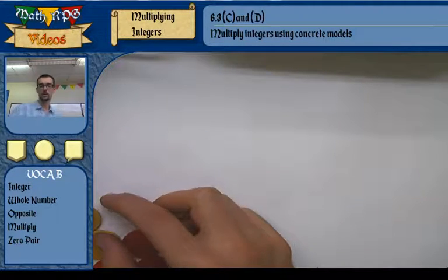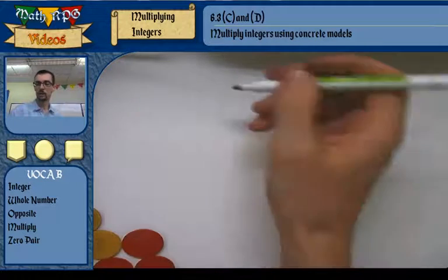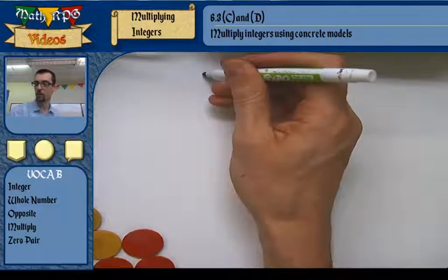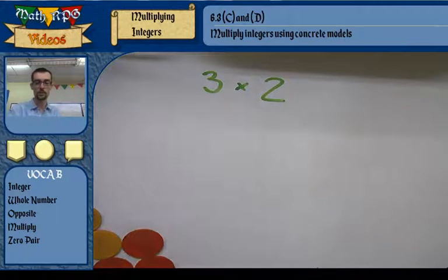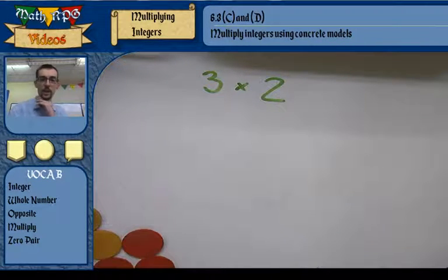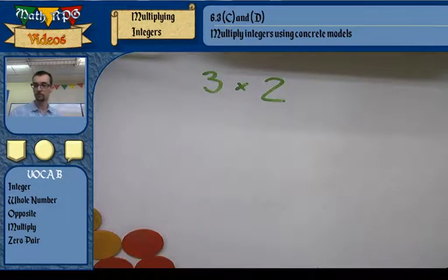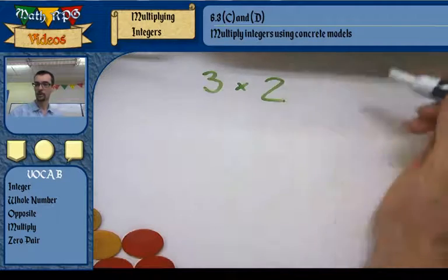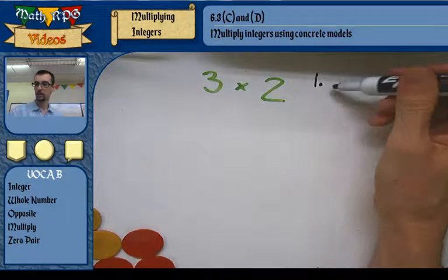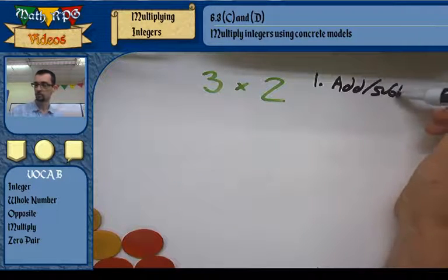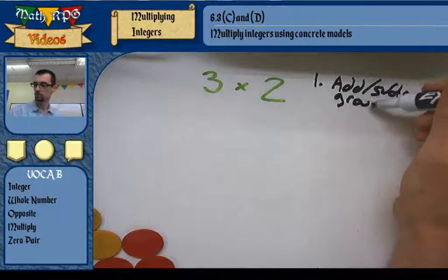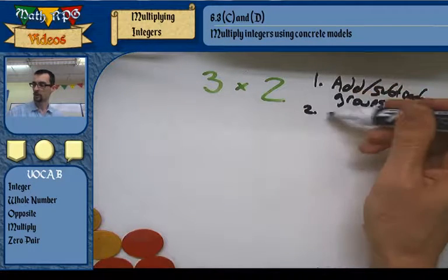Let's take a look at a sample problem. We'll start off with two positive integers. The first number tells me whether to add or subtract groups, and the second number tells me the size of those groups.